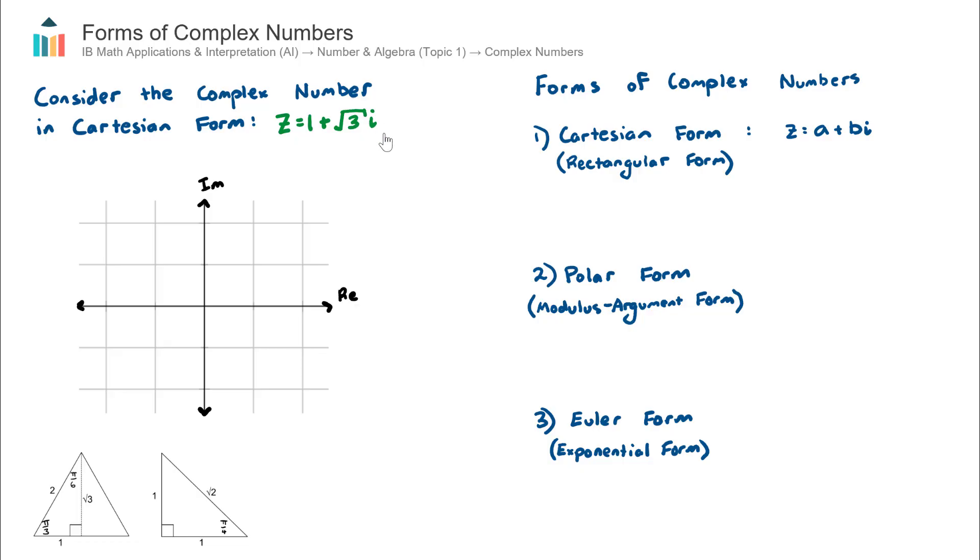Let's start by revisiting the complex number that we looked at in the Introduction to Complex Numbers video, 1 plus square root 3i. Let's plot this again on our complex plane. That'll allow us to visualize the complex number and pull out the information that we need in order to convert it to polar form. So we have z equals 1 plus root 3i. To plot this, we simply go across to the corresponding value on the real axis, which is 1. So the real component has a value of 1. The imaginary component has a value of root 3, which as a decimal is about 0.7.